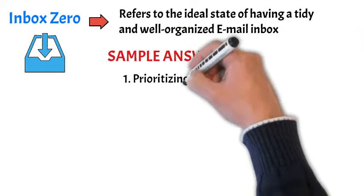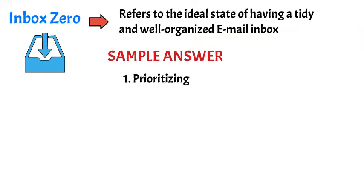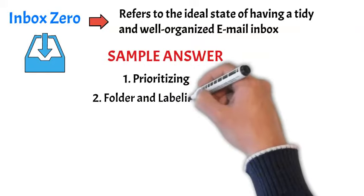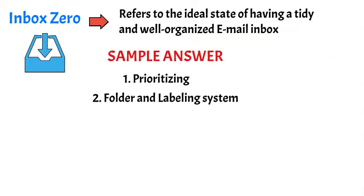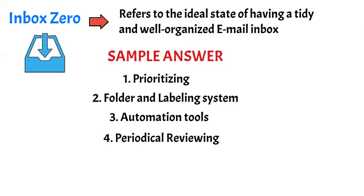However, I try to get there through some ways. My approach includes prioritizing tasks and dealing with urgent communication promptly. I also rely on a folder and labeling system I have implemented in my inbox — it allows me to organize my mailbox efficiently and locate discussions related to a project, client, or issue very easily. I also rely a lot on automation tools, which help me in sorting and filtering incoming emails so that regular and unimportant emails go to their respective folders, allowing me to focus on critical communication in my main inbox.